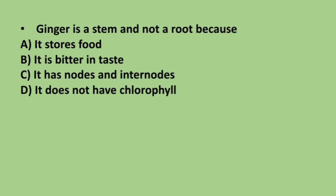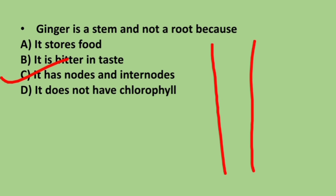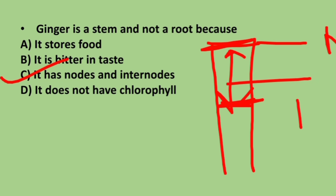Next question: ginger is a stem and not a root because — it stores food, it is bitter in taste, it has nodes and internodes, or it does not have chlorophyll. The correct answer is option C: it has nodes and internodes. The node is a distinct point, and the space between two nodes is called an internode.